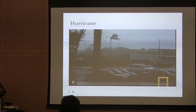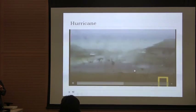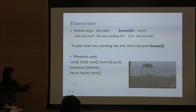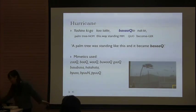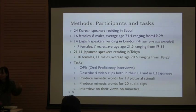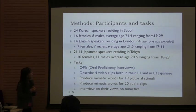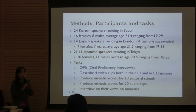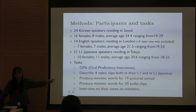And for the hurricane, speakers used mimetics like ZA, BA, WA, BUA. I had more Korean speakers than English speakers. I made sure that they were residing in their country of origin because context affected the data. I checked their proficiency using the oral proficiency interview. Only Korean speakers had very highly proficient speakers. English speakers also had some advanced-level speakers. The levels refer to the ACTFL — American Council on the Teaching of Foreign Languages — scale.